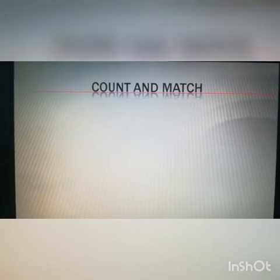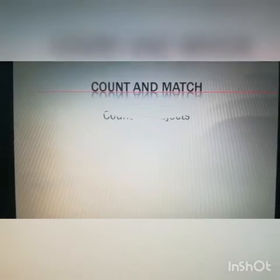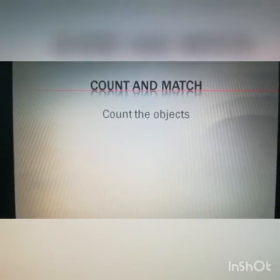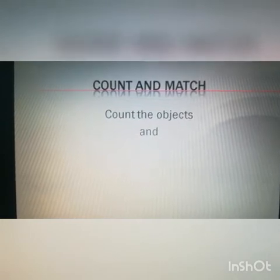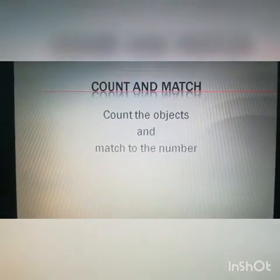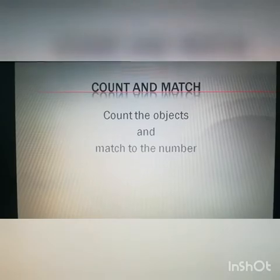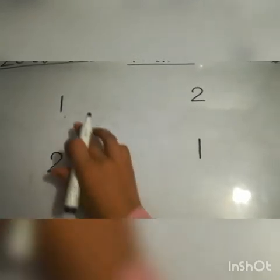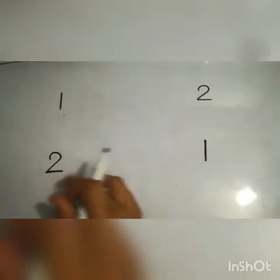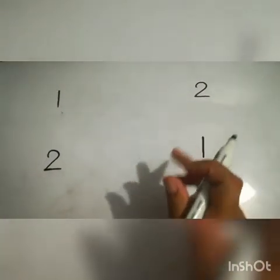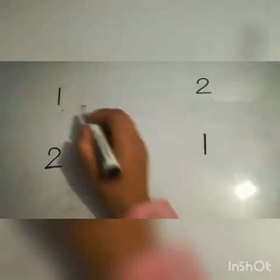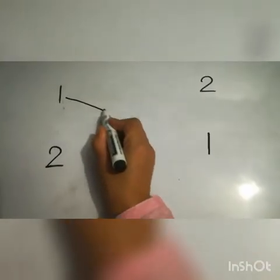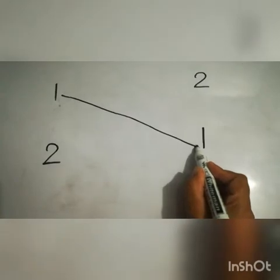You have done the recognition activity. Now you will count and match. In this activity you will count objects and match the counted objects to the related number. First of all, you will match similar numbers. See — what is this? One. Find out where is one in this line. Here it is — match one to one, similar numbers.